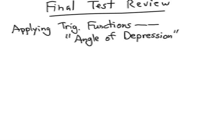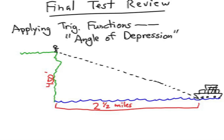Alright, this is a problem about using trig functions in an application. This is called angle of depression. A person was standing on a cliff that was 450 feet above the water, looking down at a ship that was two and a half miles away. So the question is, what is the angle of depression?